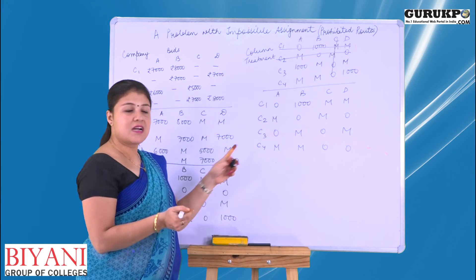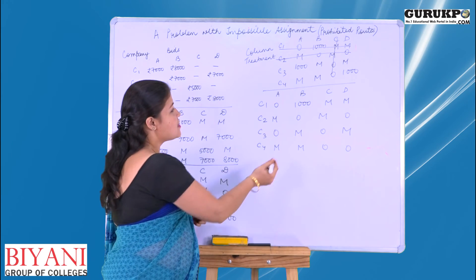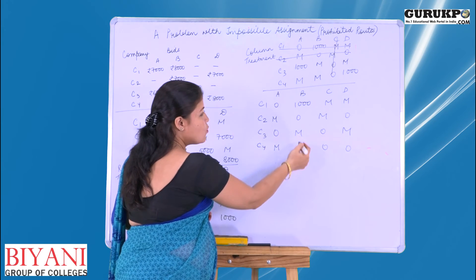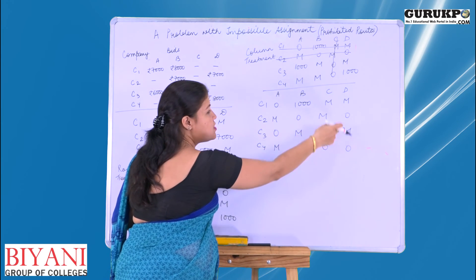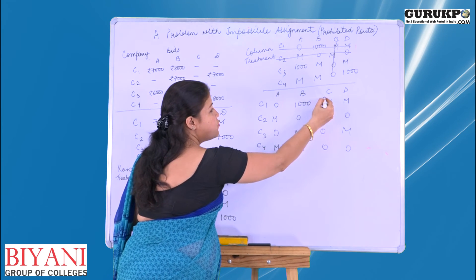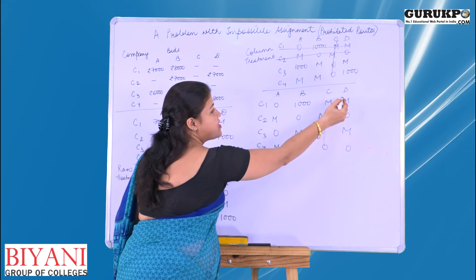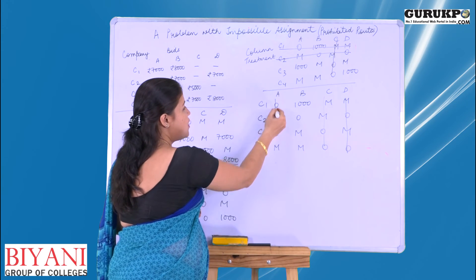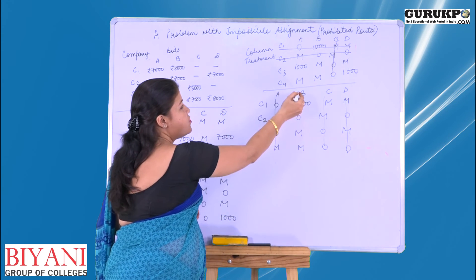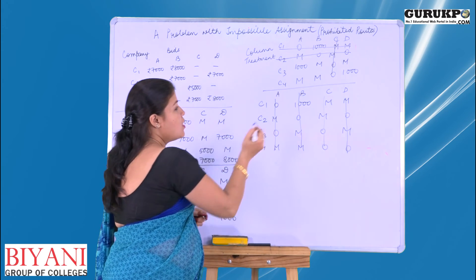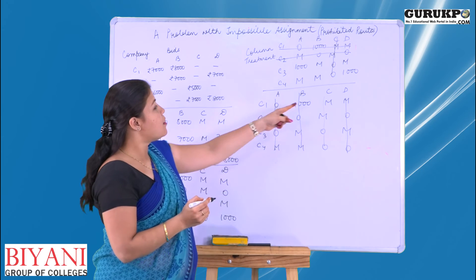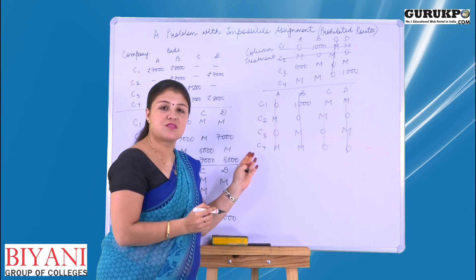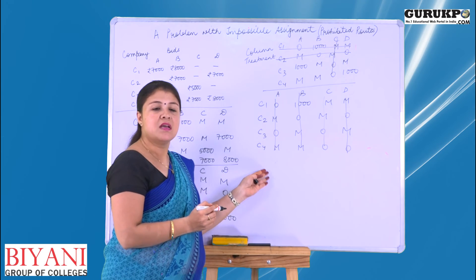Now we will again draw lines to cover all zeros. Here it is 2 zeros, 1 zero, in column 2 zeros, and 2 zeros. We cut the maximum zeros in this way, and one 0 is remaining, giving us 4 lines. Now we have the number of lines equal to the number of rows and columns, so our solution is complete.